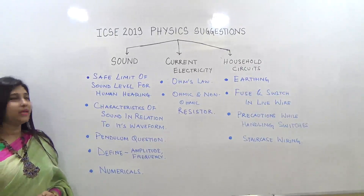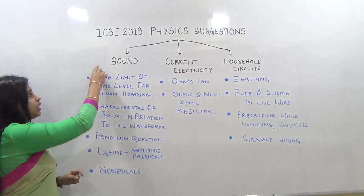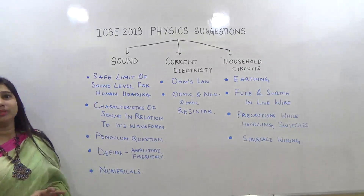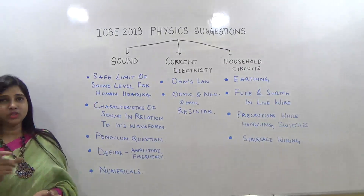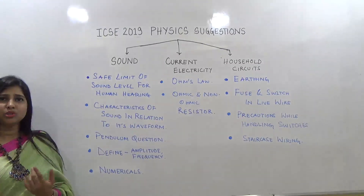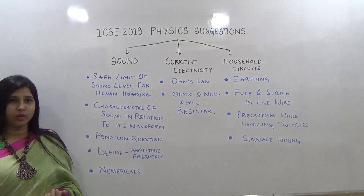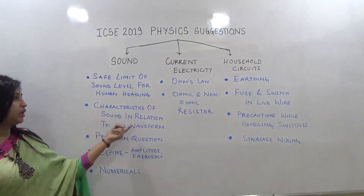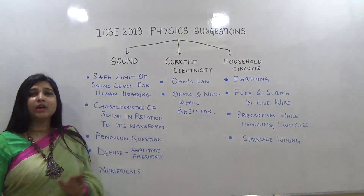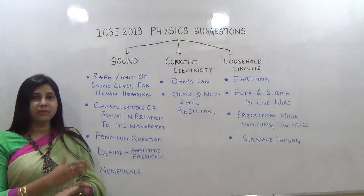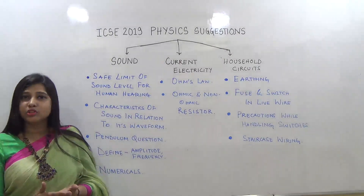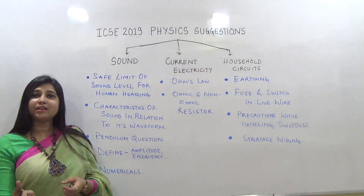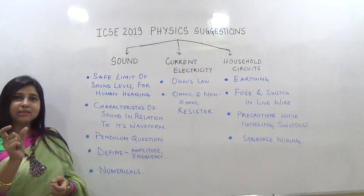Now let's come to sound. Under sound, you need to know the limit of sound level for human hearing — the range for human hearing. Then there are characteristics of sound in relation to its waveform — it could also be related to amplitude or pitch. The characteristic related to waveform is quality.